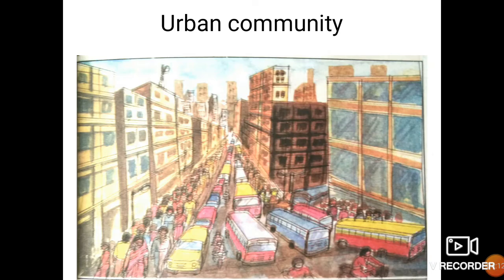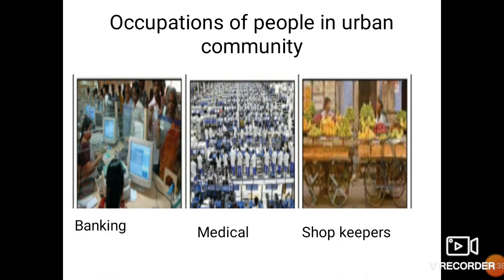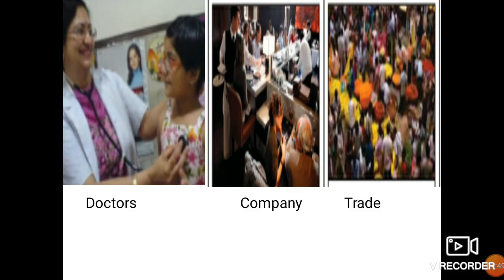Now let us learn about urban community. You can observe in the picture there are more number of people and more number of vehicles, cars, and buses. People living in cities are known as urban community. People migrate to cities in search of jobs and for better education. Occupations of people in urban community include banking, medical, shopkeepers, doctors, and few people work in companies or involve themselves in trade.